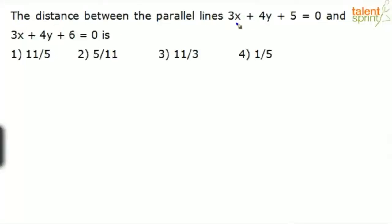The distance between the parallel lines 3x plus 4y plus 5 equals 0 and 3x plus 4y plus 6 equals 0 is: options are 11 by 5, 5 by 11, 11 by 3, and 1 by 5.